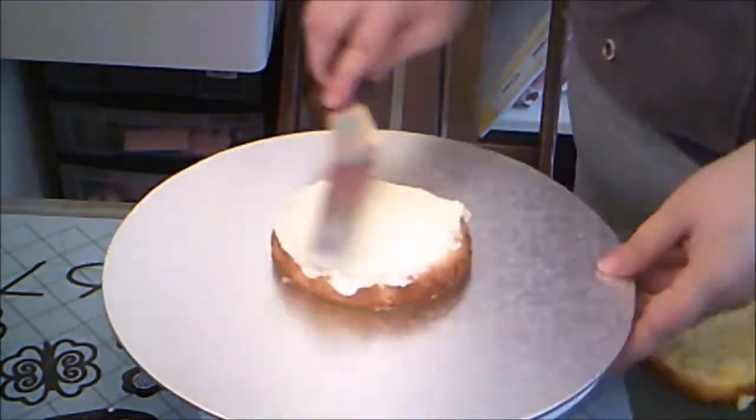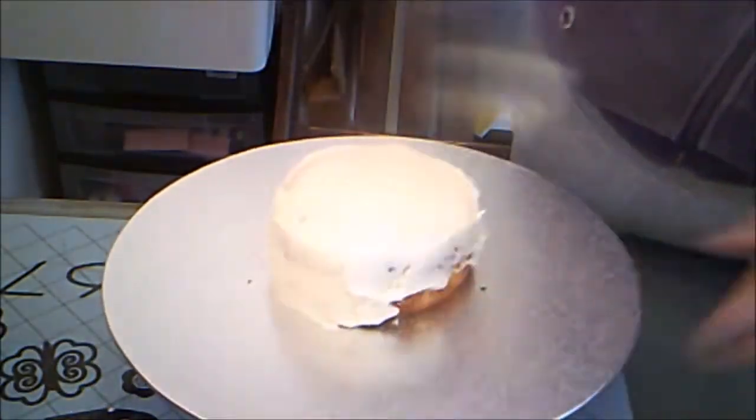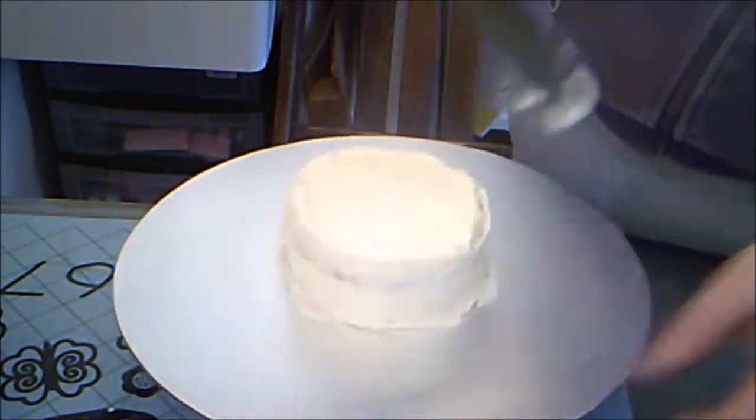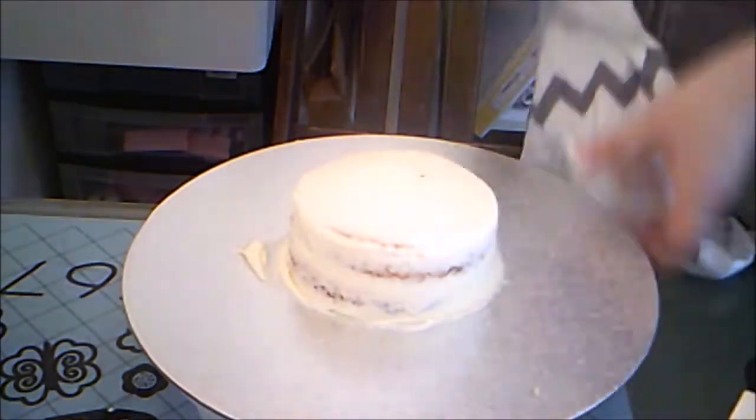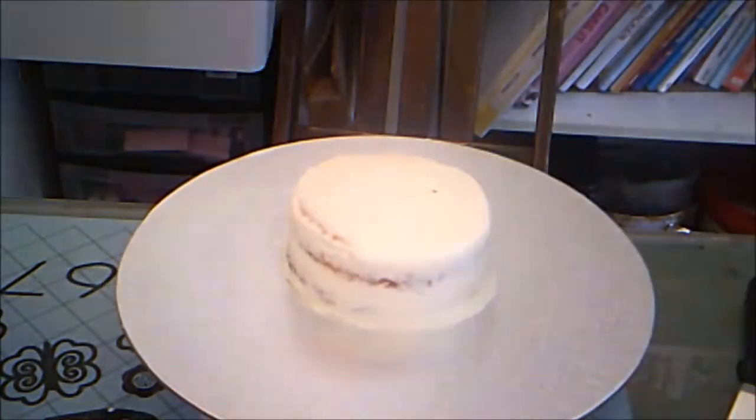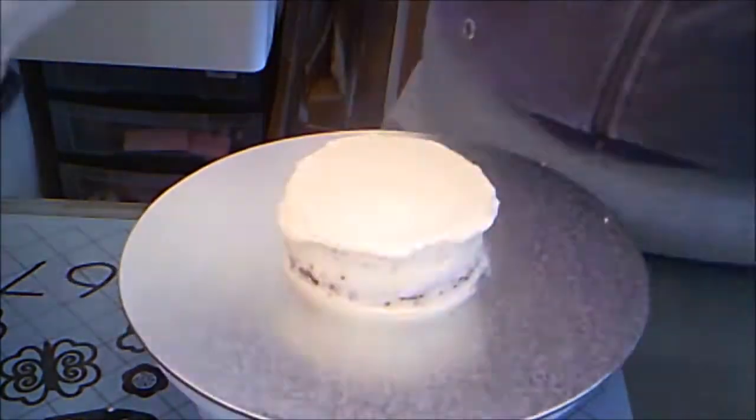Since we're still in lockdown this is a four-inch cake just for us. It's lemon cake with lemon American buttercream, recipes to follow. I stack and frost the cake and clean up the cake board. Then I frosted it again.